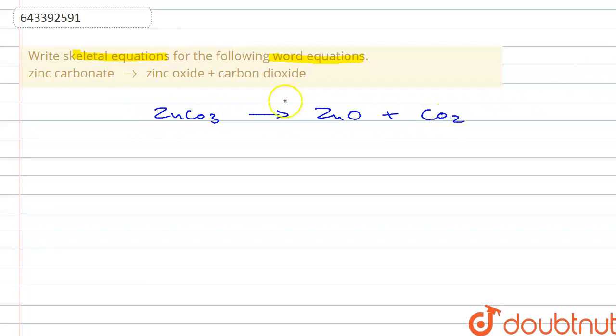This is the equation. Now zinc carbonate is in solid state which breaks up into zinc oxide which is in solid state, along with it carbon dioxide gas is released.